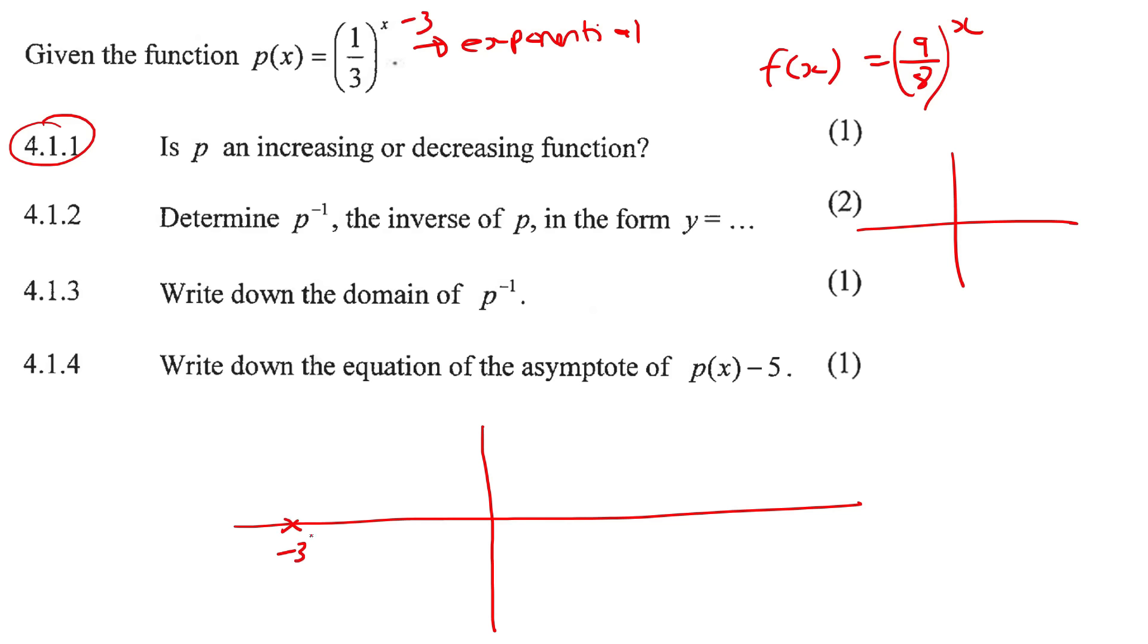So when x is negative 3, the y value is 27. That's a really high value. Then I want you to just plug in x as 0, and you're going to end up with 1. And then plug in x as 2, because I'm trying to find something here, something here, and something here so I can get an idea of the shape. Then plug in x as 1, and you're going to get a third, which is even lower. That's like there.